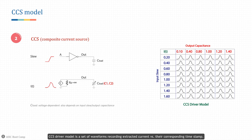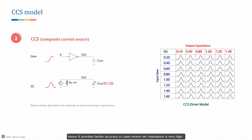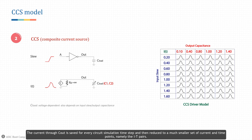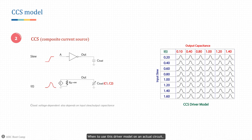The CCS driver model is a set of waveforms recording extracted current versus their corresponding timestamp. It is characterized by capturing current waveforms flowing into the load capacitor of the cell — essentially a current source with infinite driver resistance, hence providing better accuracy where net impedance is very high. The CCS driver model also has sensitivity to input transition time, output load, and side-input states, which helps model cell delay accurately due to the resistive effect on interconnection. These characterization experiments are repeated for a table of different input transition and output load combinations. The current through Cout is saved for every simulation time step and then reduced to a much smaller set of current-and-time points, namely the IT pairs.